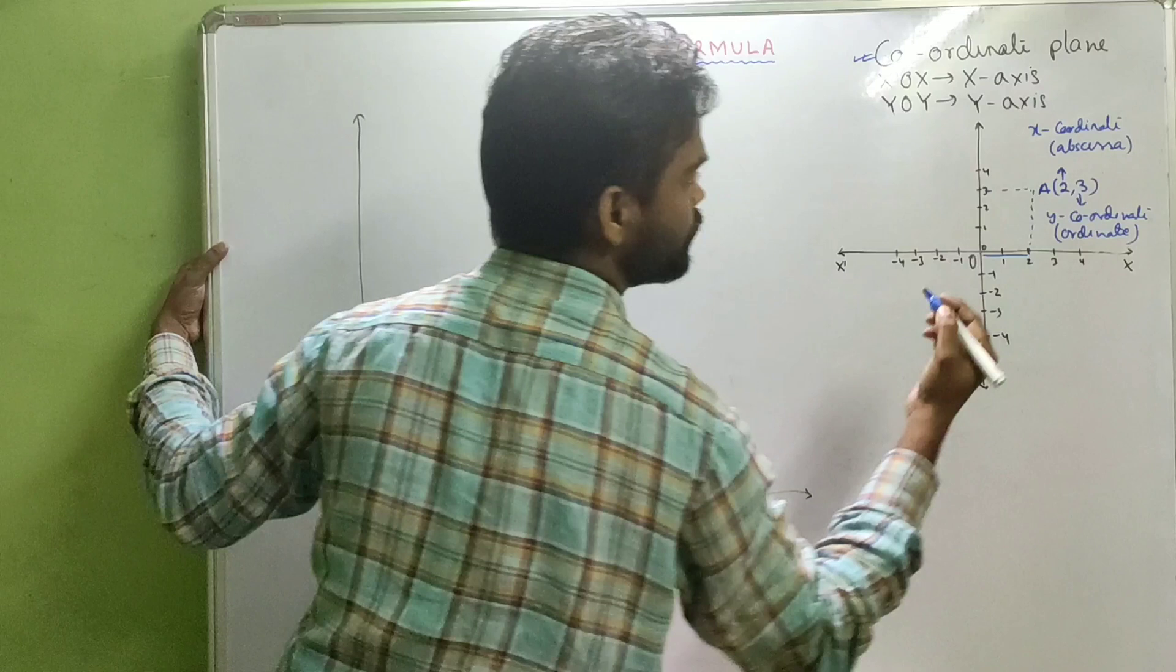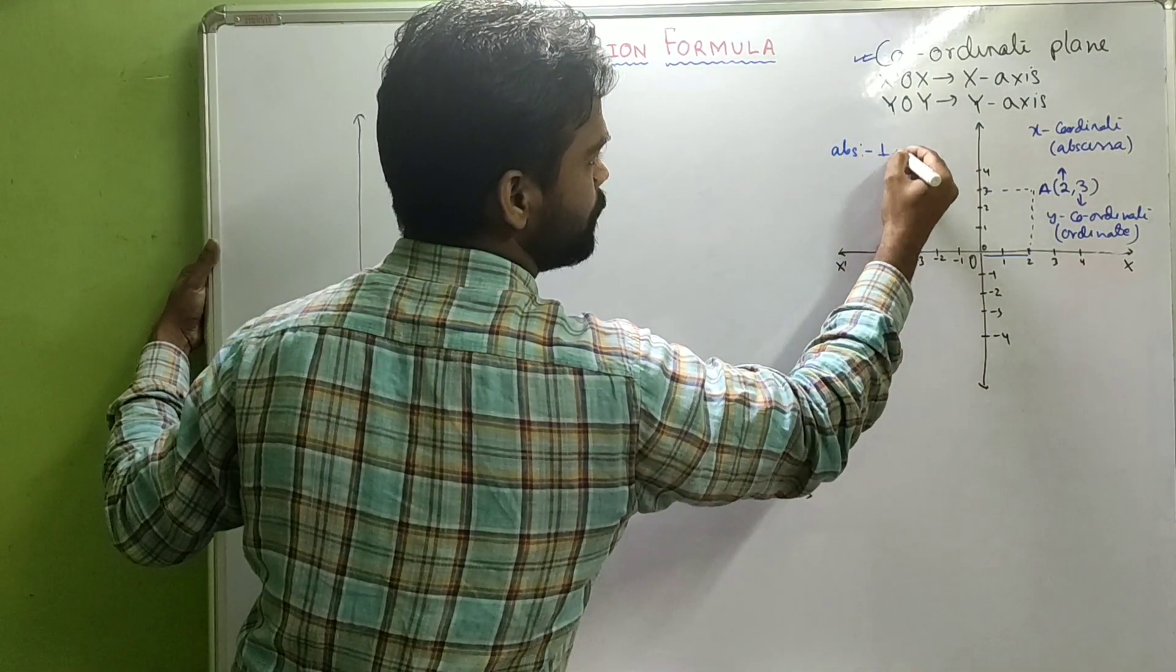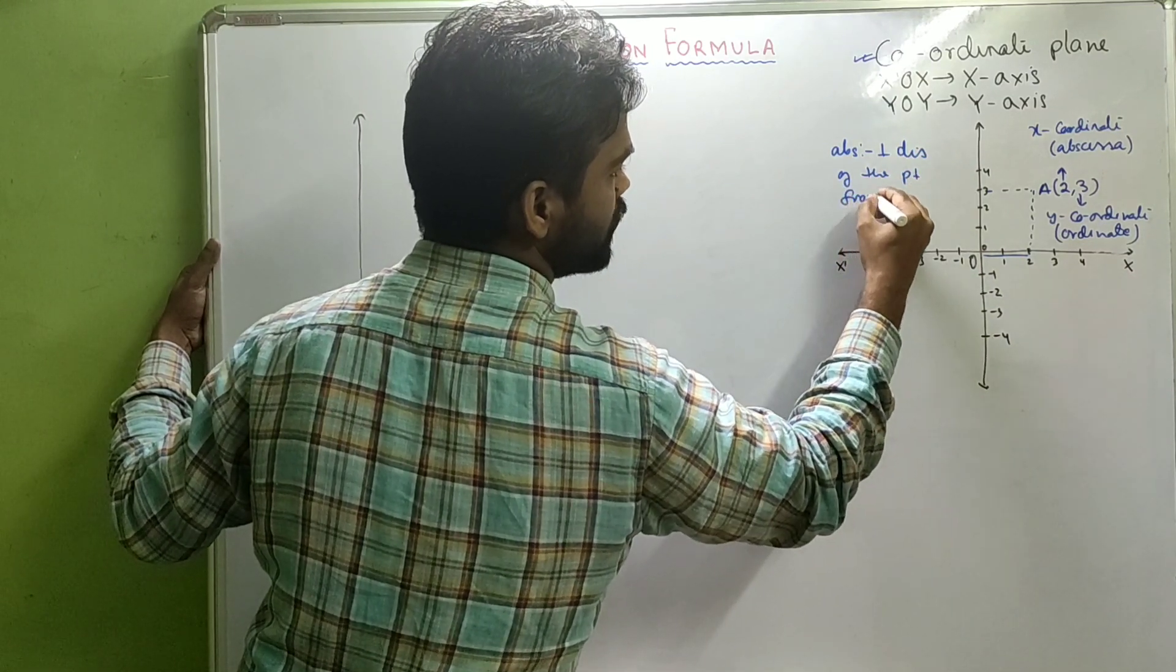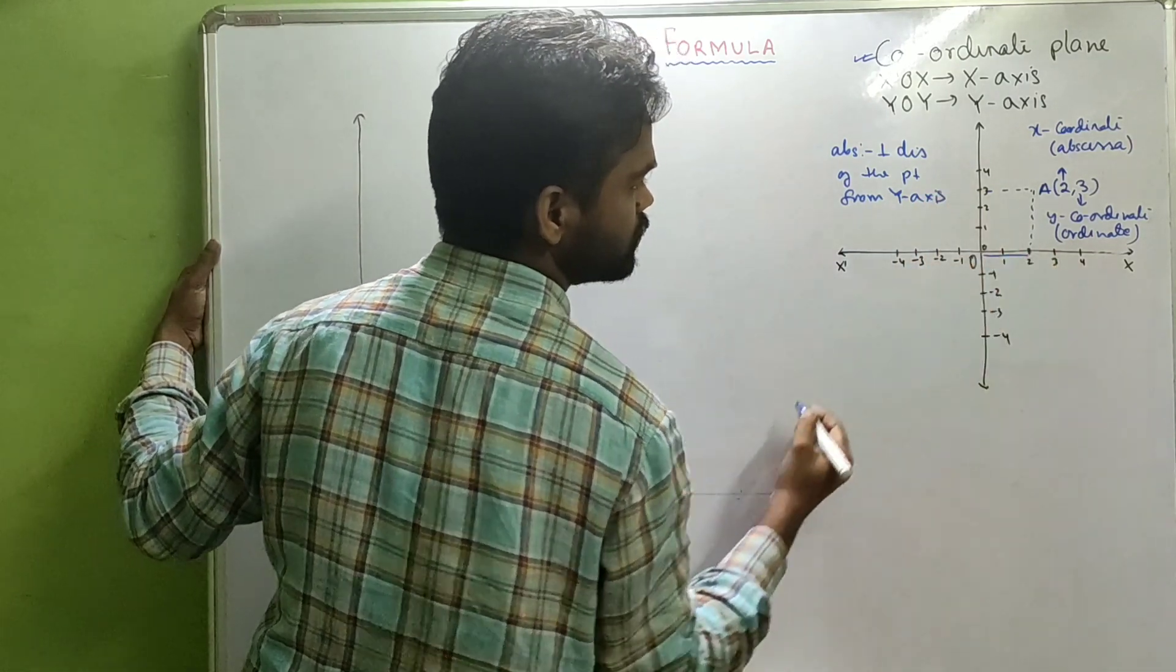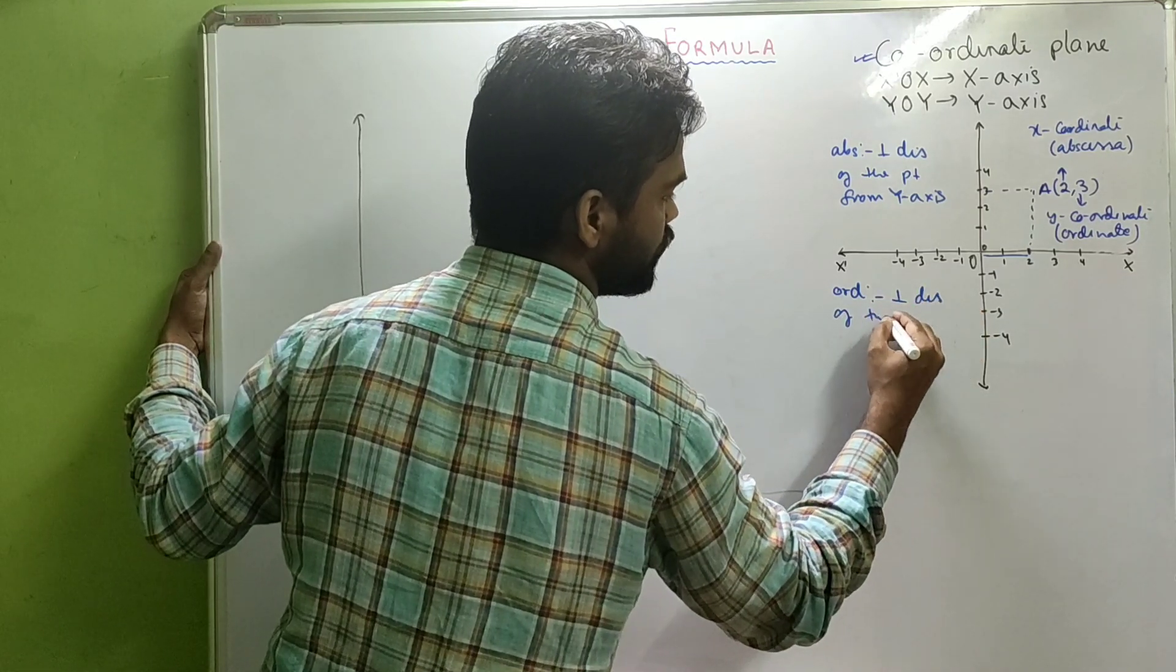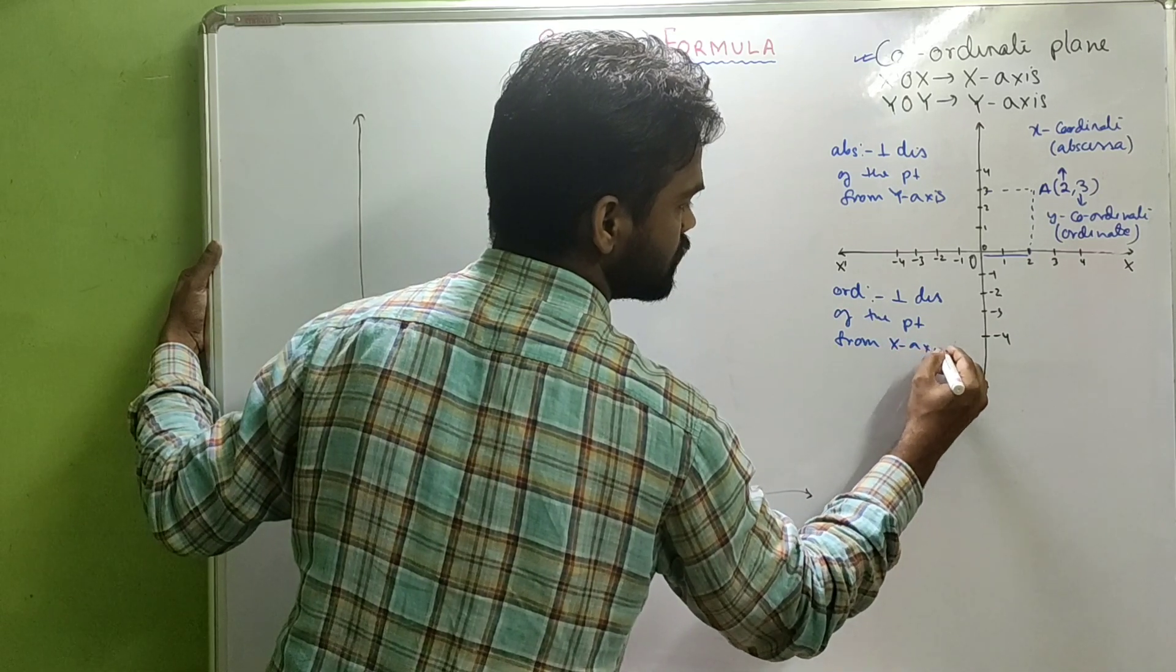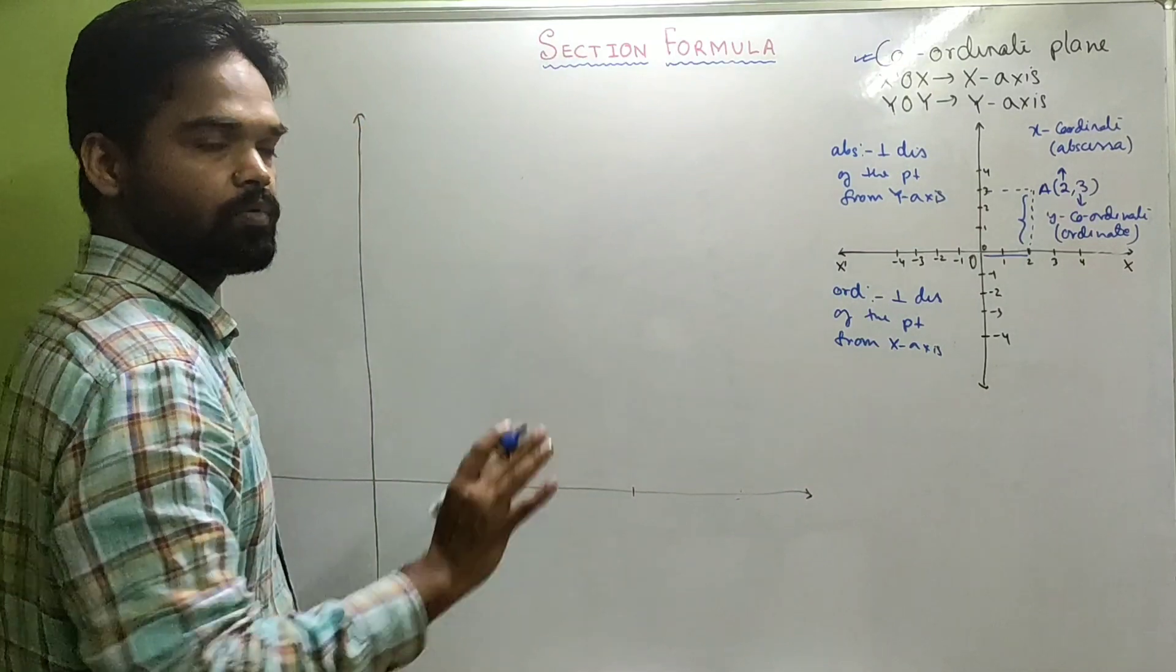And if you look carefully, abscissa is nothing but perpendicular distance of the point from y-axis. And ordinate is nothing but perpendicular distance of the point from x-axis. Look over here. This is 3. We know this fact.